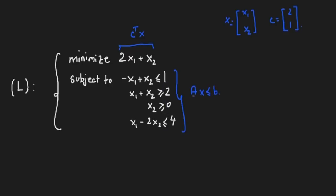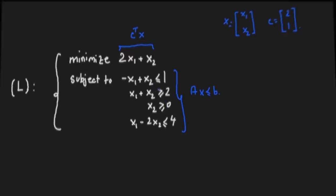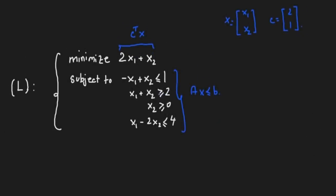To align with Ax ≤ b, we have to flip the greater than or equal constraint to a less than or equal. All you have to do is multiply by a minus on both sides, so this becomes minus and we get less than -2. Likewise the third constraint, we multiply by a minus on both sides to get -x₂ ≤ 0.